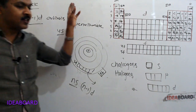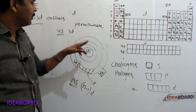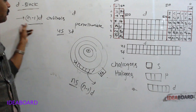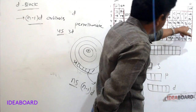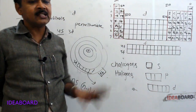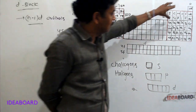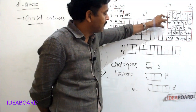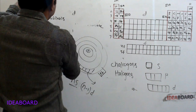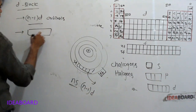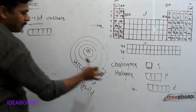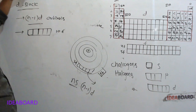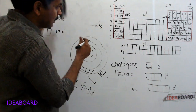The elements in which the differentiating electron enters into the n-1d orbitals are called D block elements. The d subshell contains 5 orbitals, and each orbital accommodates 2 electrons, so d subshell can accommodate 10 electrons. That is why D block contains 10 groups.